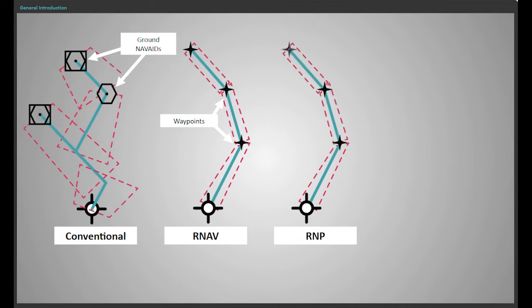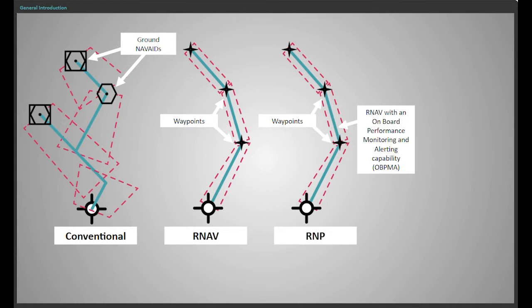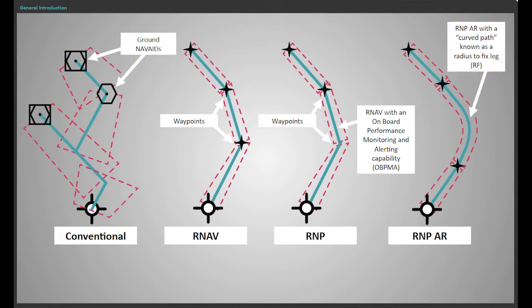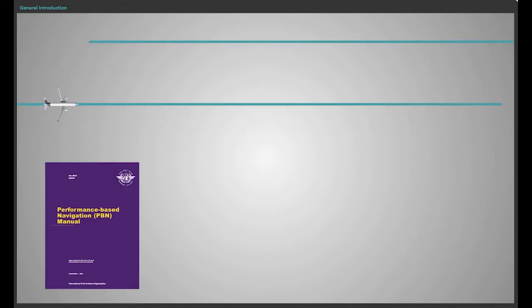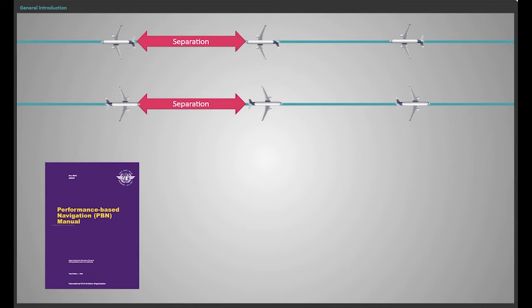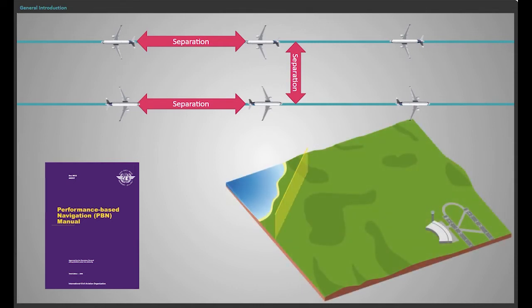RNP uses the RNAV navigation method plus an onboard performance monitoring and alerting capability. One of the specifications of RNP AR approaches is RF legs — radius to fix — which can come after the final approach point, FAP. The PBN concept allows optimised instrument procedure design along with aircraft navigation performance, used en route to reduce aircraft separation and in the terminal area to optimise approach and departure procedures.